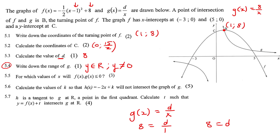If they ask for the domain of a hyperbola, it's everything except the vertical asymptote.